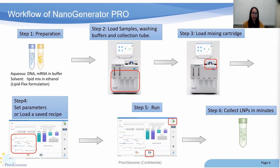First, we prepare our mRNA sample and lipid formulation separately in two centrifuge tubes. Then we load the samples, wash the bubbles, and place a clean collection tube into the reagent slots on the Pro. Next, we simply insert the mixing chip into the chip holder. After setting the parameters, we save the recipe and hit run. Your mRNA lipid nanoparticle product is ready in minutes.